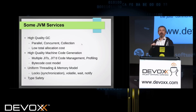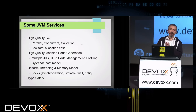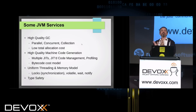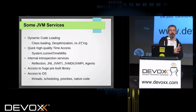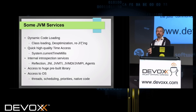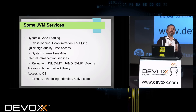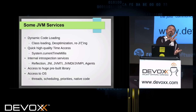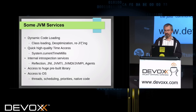The bytecode cost model is a key thing that the JIT brings in. There's a uniform threading and memory model — that was not possible when Java started. Java broke some ground and said this is what it means to have threads communicate across all kinds of different hardware. There's type safety, dynamic code loading — you don't have to have the closed world assumption, you can keep adding code and it all just works. There's also a huge library, quick runtime access, and lots of internal introspective services, including access to the OS level for threads, scheduling priorities, and native code.